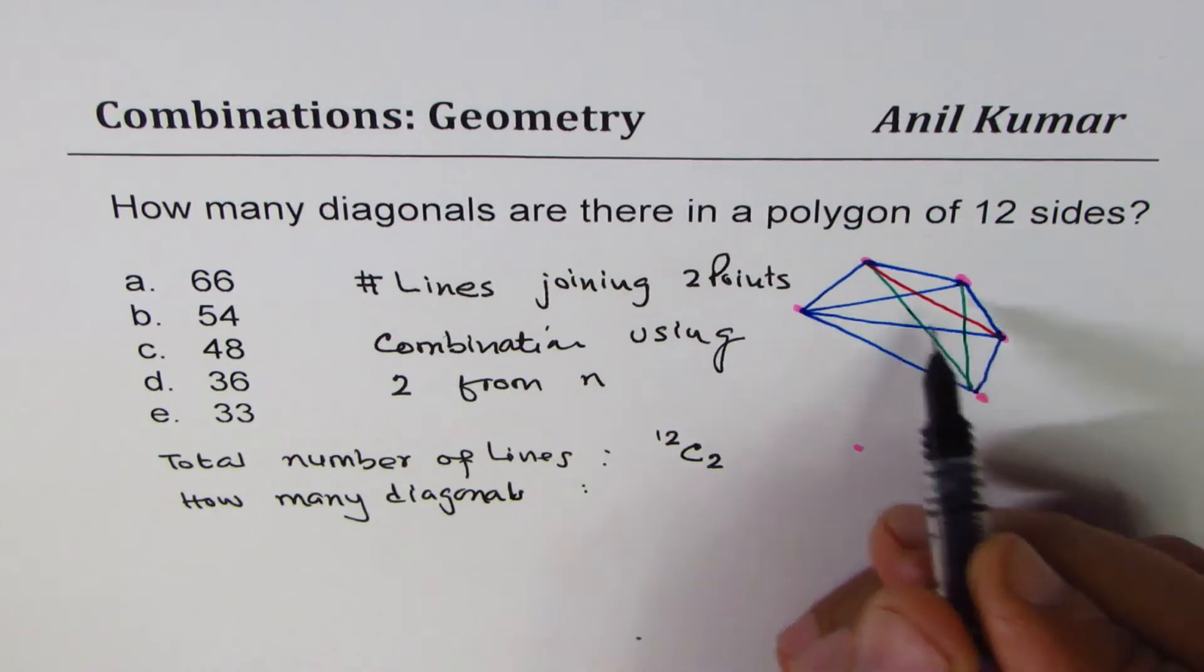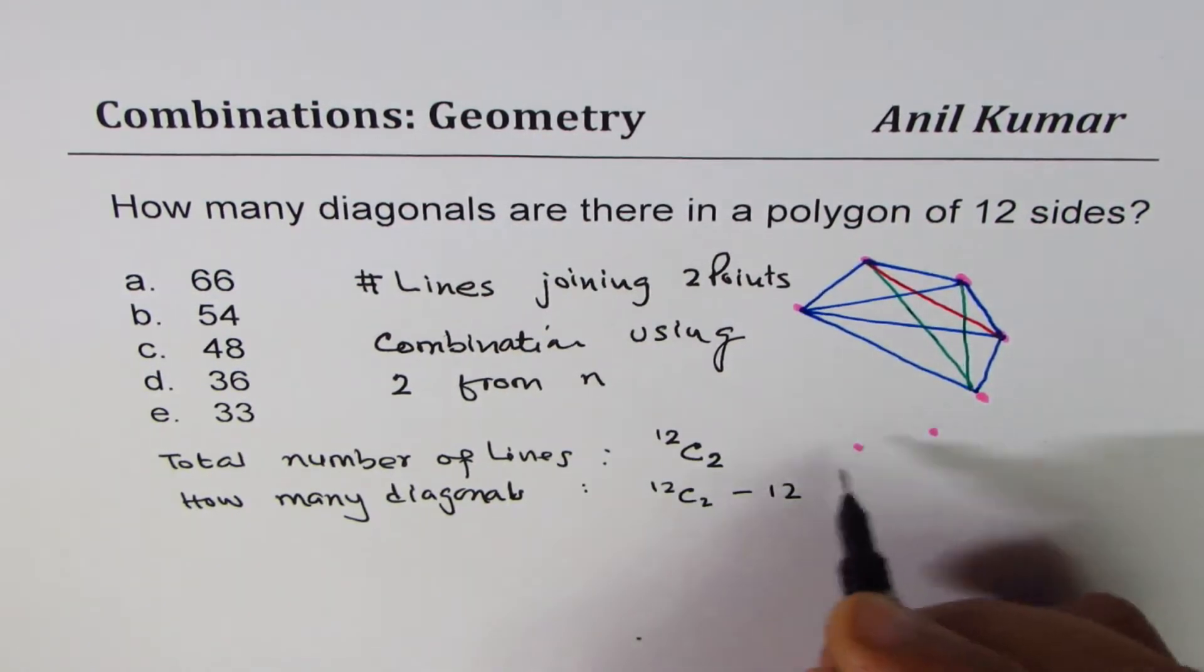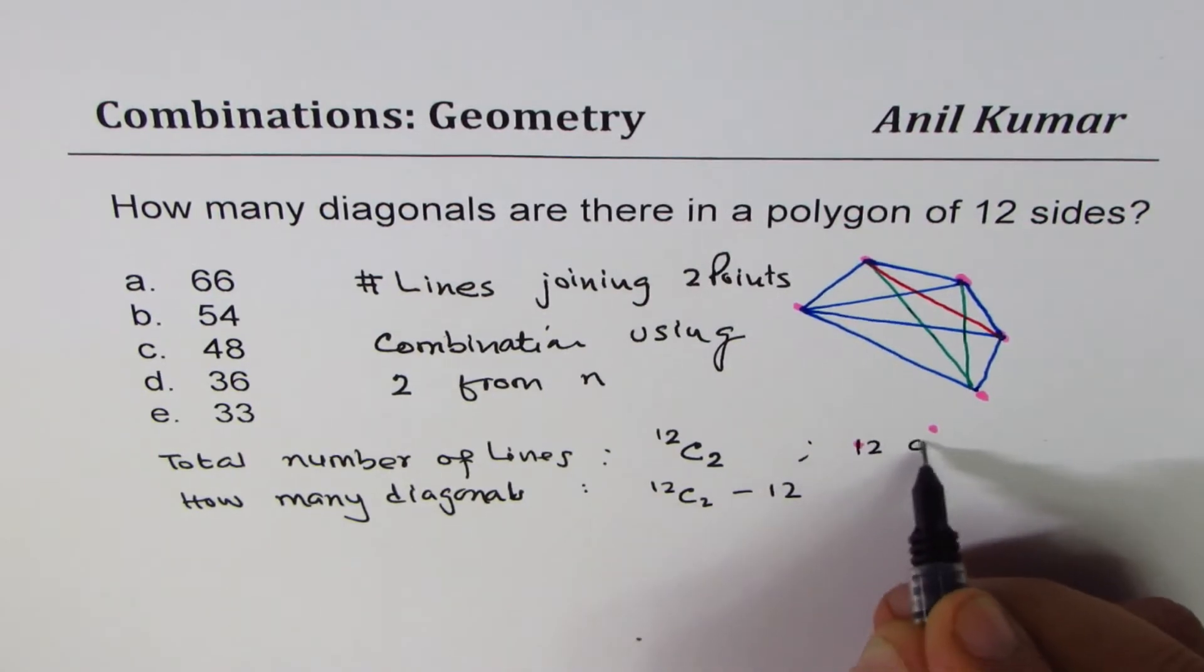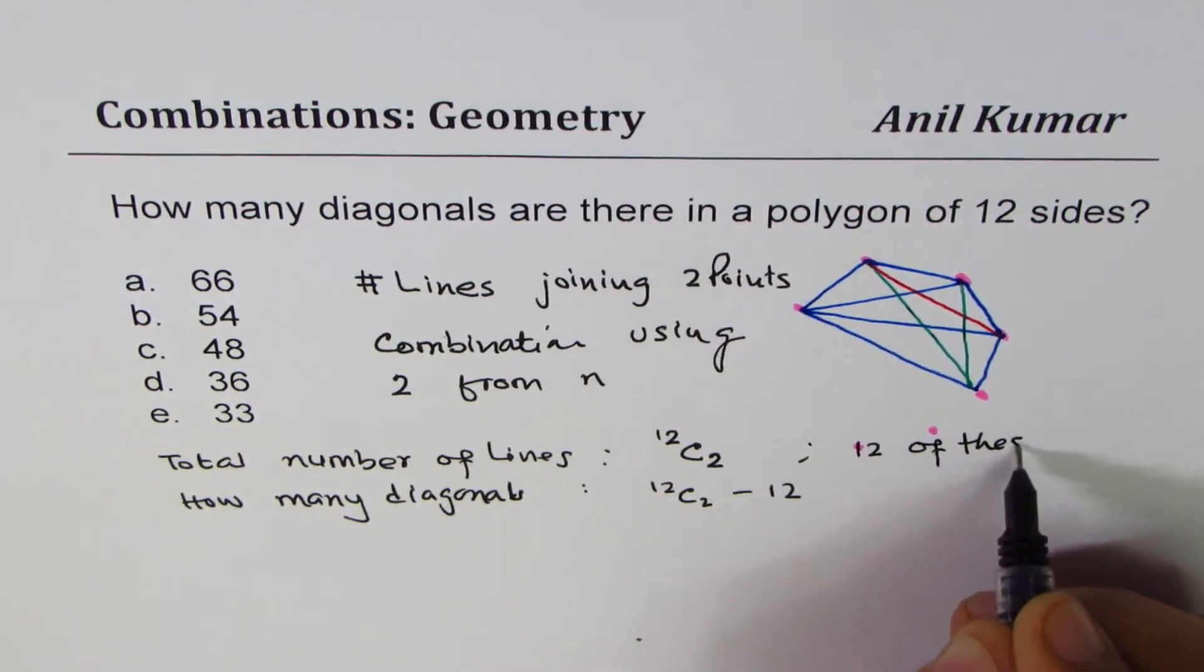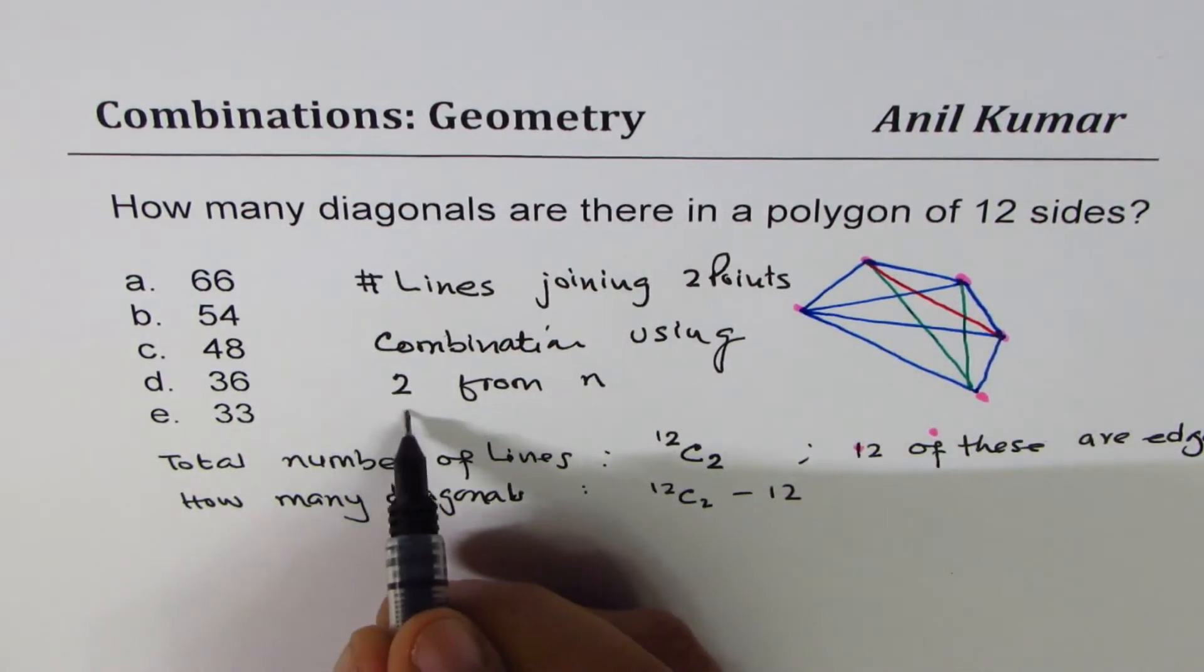So we have to take the edges. From 12C2, we take away 12 because 12 of these are edges. For n, we have n edges.